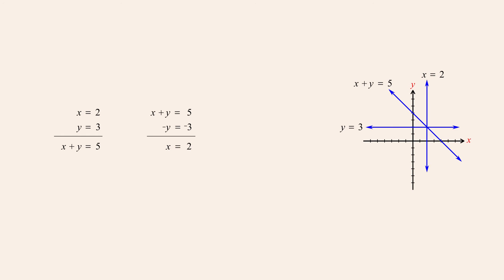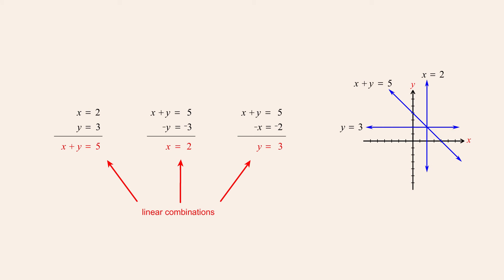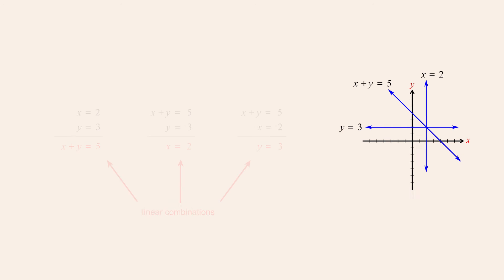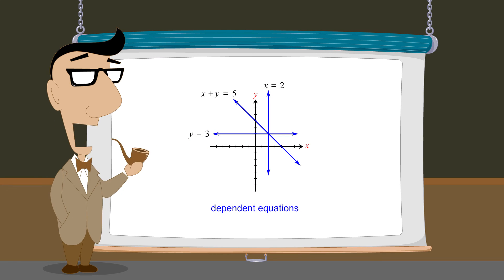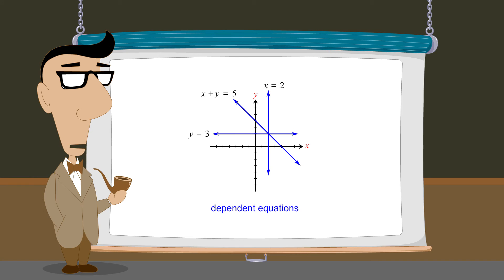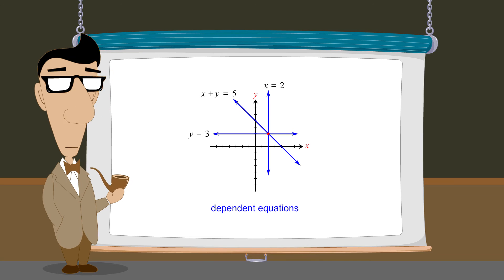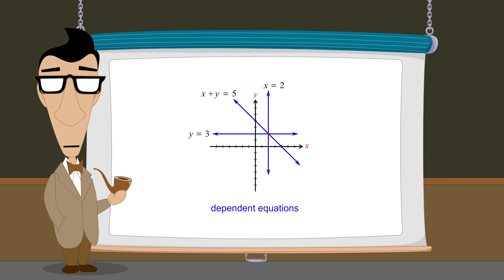And adding one times the equation x plus y equals five to negative one times the equation x equals two produces the equation y equals three. Since each one of these three equations is a linear combination of the other two, all three equations are dependent. Notice that even though this system is dependent, it has a single unique solution corresponding to the common intersection point of the graphs of the three equations. This shows how it is possible for a system with more than two equations to be dependent without necessarily having infinitely many solutions.